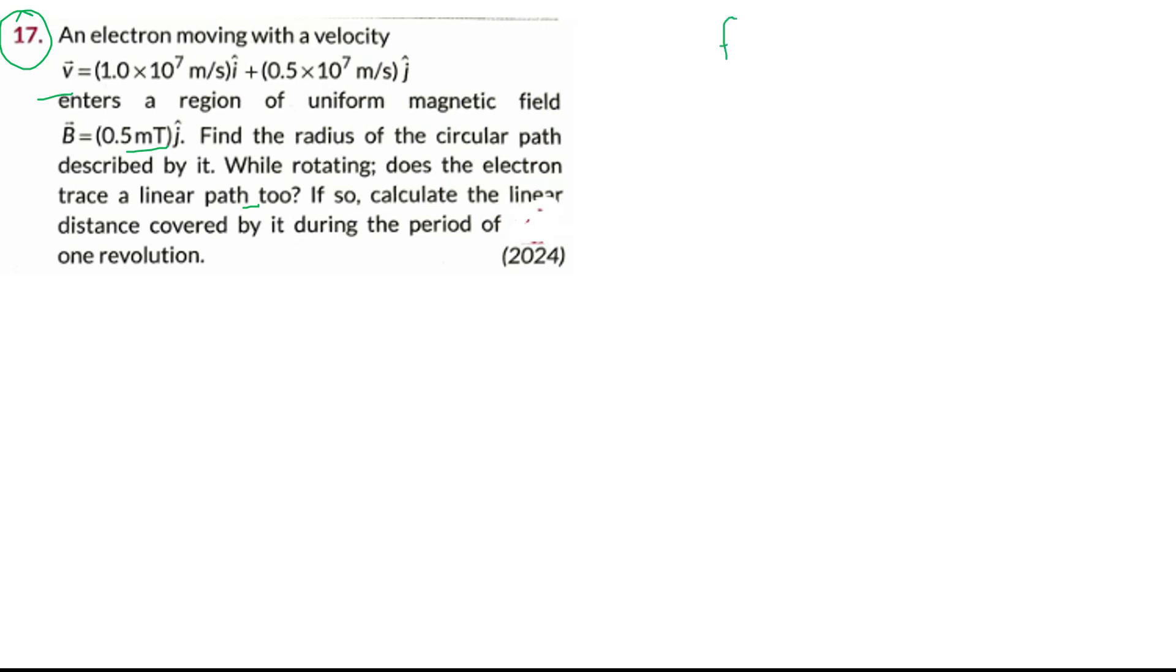We know the force acting on a charged particle moving in a magnetic field. The formula is Q V cross B. Two cases arise. When theta is 0 or 180, force is 0. QVB sine 0 is 0.